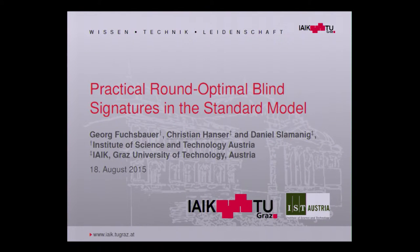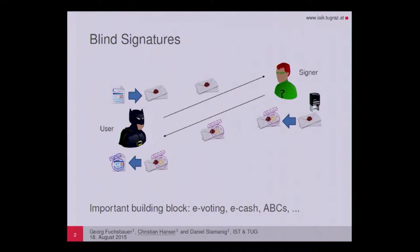Thank you for the introduction. Blind signature schemes are two-party protocols where a user can obtain a signature on some message from a signer in such a way that the signer cannot link the resulting message-signature pair to the signing process. These are important building blocks for e-voting, e-cash, and one-show attribute-based credentials.